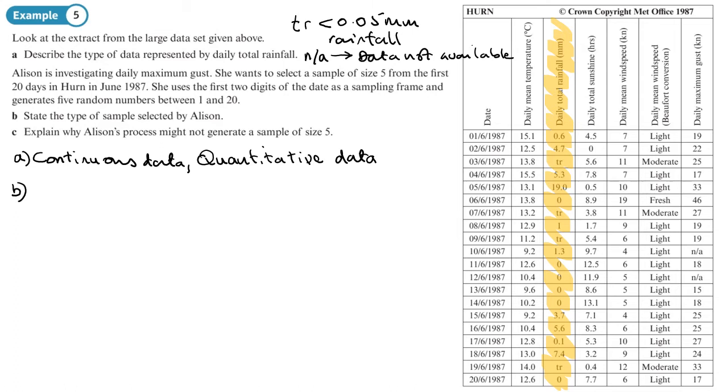Okay, back to the question. Part B: Allison is investigating the daily maximum gust, which you only get in the UK. She wants to select a sample of size five from the first 20 days in June 1987. She wants to use the first two digits of the day as a sampling frame and generates five random numbers between one and 20. Describe the type of sample method that Allison has used. Now since she's generating random numbers, there's nothing systematic about it - it's completely random. So it's going to be a random sample or random sampling.